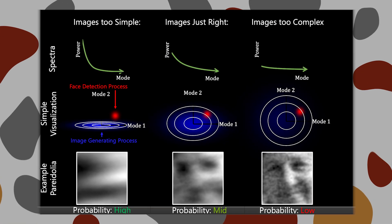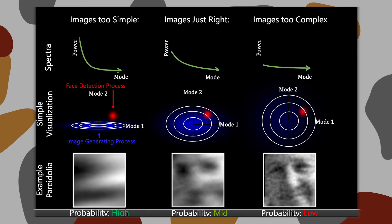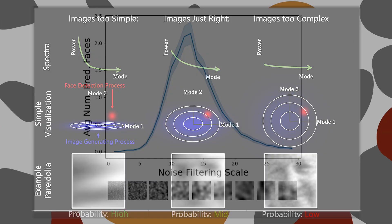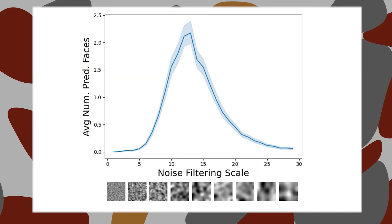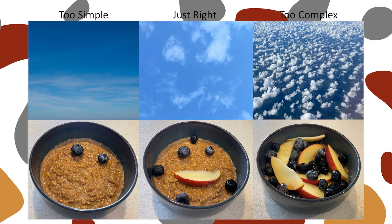In addition to showing that pareidolia and animal face detection are intimately linked, we also wrote a closed-form expression for pareidolia. This equation tells you when and where pareidolia might be more likely than not. The interesting thing about a closed-form equation is that you can plot it, ask questions about it, and explore what kind of behavior it has.